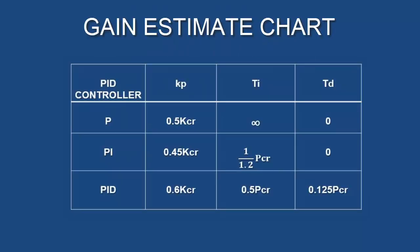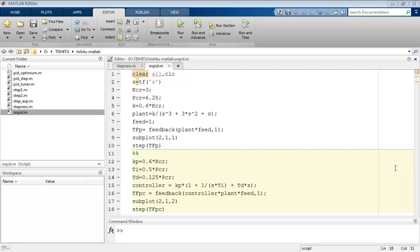Now with this value of KCR equal to 3 and PCR equal to 6.28, evaluate the value of Kp, Ti, and TD concerning this table. We include the step of evaluation of these parameters in MATLAB code itself. In this code file, we define the controller by the equation Kp into 1 plus 1 upon Ti into s plus TD into s, and combine it with the system.